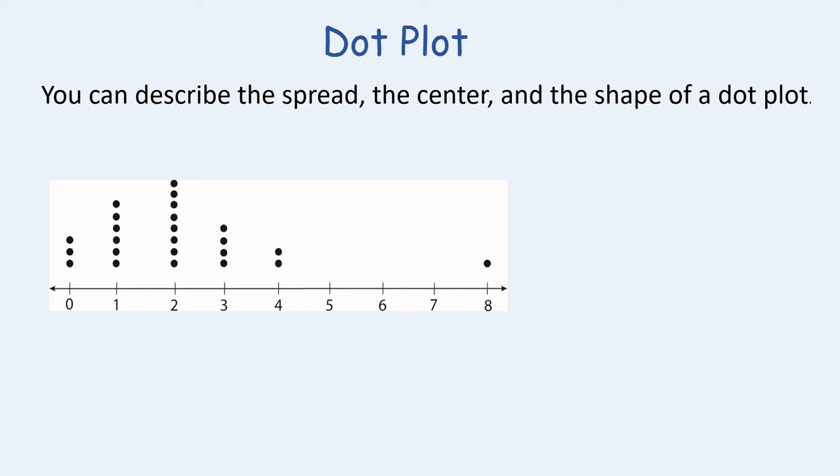We're going to now describe the spread, the center, and the shape of a dot plot. This image on screen is going to be filled with lots of vocabulary, so follow along with me. First, we're going to talk about the spread of a dot plot. The spread refers to the range or difference between the least and greatest values. In the case of this dot plot, we are looking at eight minus zero, so the spread would be eight.